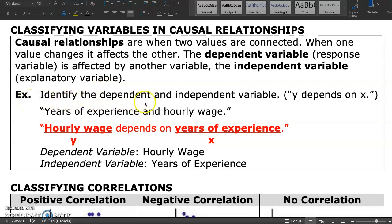Example: identify the dependent and independent variable for this situation. The sentence Y depends on X will help you identify the dependent, Y, and independent variable, X. So, years of experience and hourly wage.